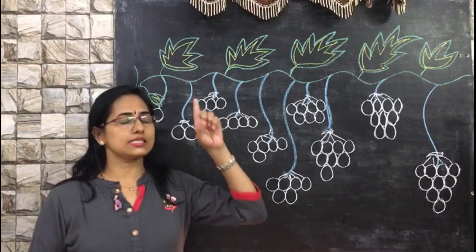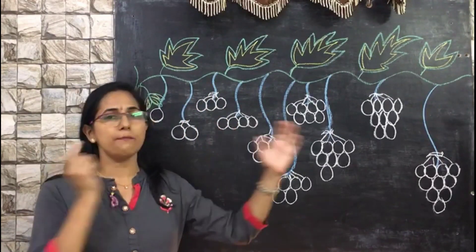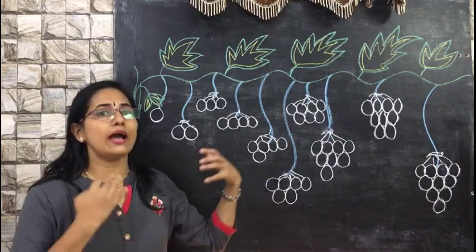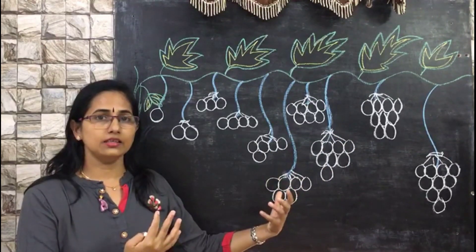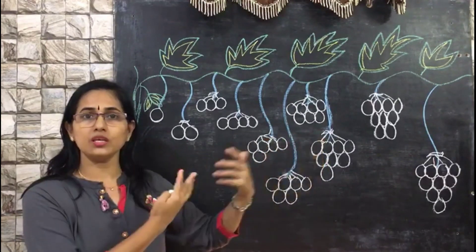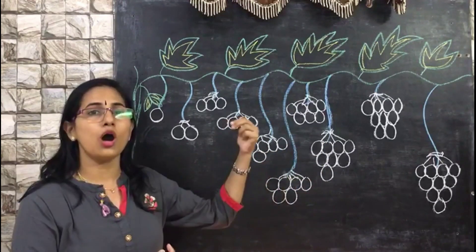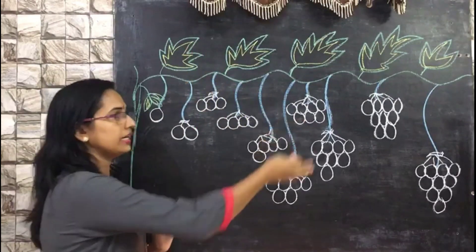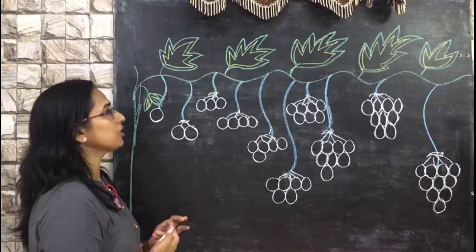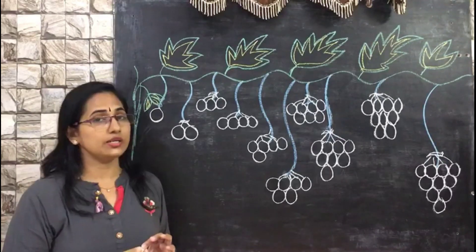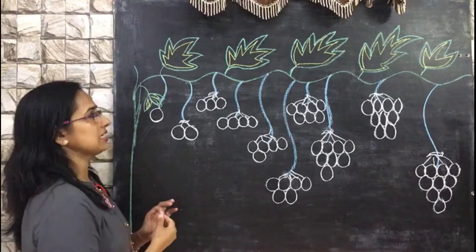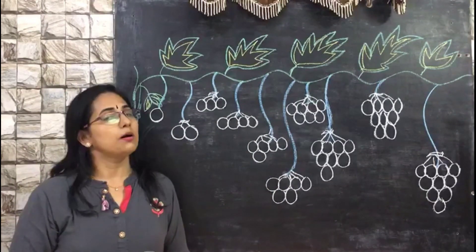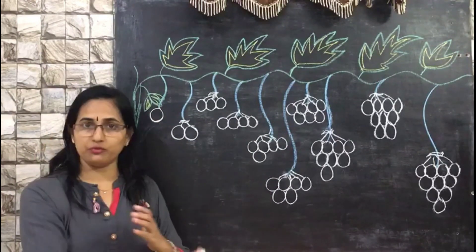Now let's see how to introduce big and small numbers. Step number one is comparison. We should give an exercise or activity that involves a comparison between big and small numbers. Here we have a grapevine and a bunch of grapes. Generally, we ask children to identify the big number first and then the small, but I tried a different way to introduce big and small numbers.